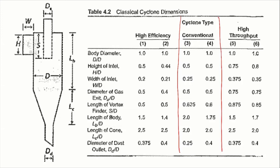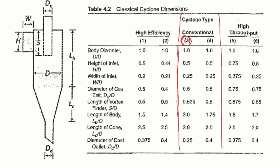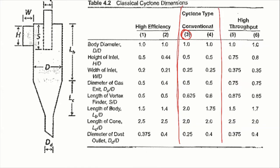We mentioned that we can have high efficiency or high throughput. For conventional cyclones we're dealing with these two columns, and we'll just choose number three. All the geometry dimensions are normalized by the body diameter, which is the capitalized D. Once we know the body diameter — for example, if it's one meter — we should be able to calculate all the other dimensions.